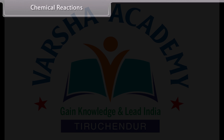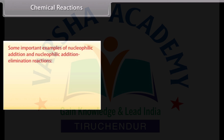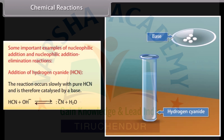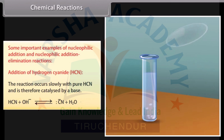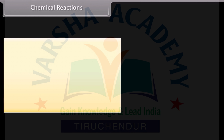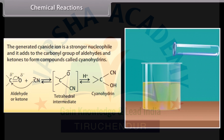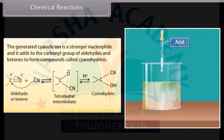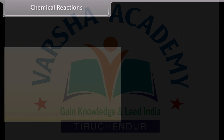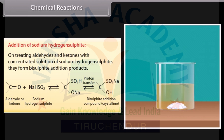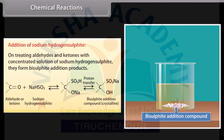Some important examples of nucleophilic addition reactions: Addition of hydrogen cyanide — the reaction occurs slowly with pure HCN and is therefore catalyzed by a base. The generated cyanide ion is a stronger nucleophile and it adds to the carbonyl group of aldehydes and ketones to form compounds called cyanohydrins. On treating aldehydes and ketones with a concentrated solution of sodium hydrogen sulfite, they form bisulfite addition products.